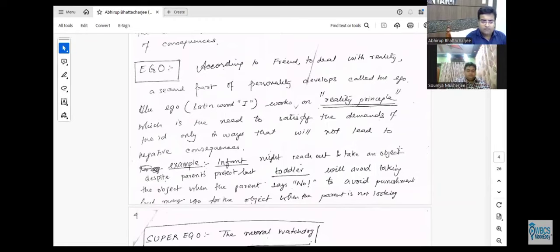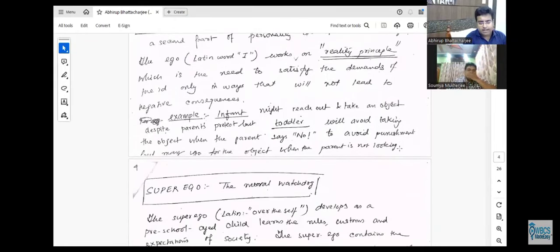For example, infant, the toddler, the super ego. Super ego can define column super ego.